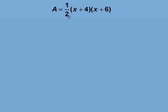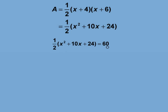The area of a triangle is one-half the base times the height. So let's plug in the values from the triangular diagram. We end up with this formula for the area. We make that formula equal to 60, the area of the triangle.